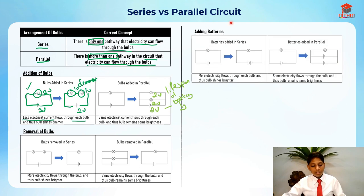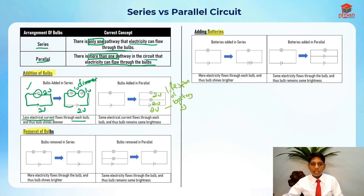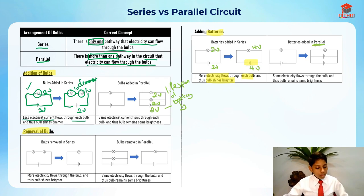For the addition of batteries: batteries added in series increases electricity flow through each bulb and the bulb shines brighter. If each battery was two volts, the total becomes four volts, and the bulb receives four volts instead of two and becomes brighter. For parallel circuits, the same electricity flows through the bulb and brightness remains the same.